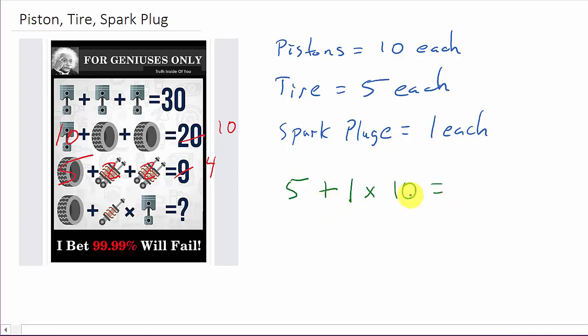Well, what a lot of people put down is 60, because they'll do the 5 plus 1 is 6, and then multiply that times 10 and get the 60. But you've got to think about your order of operations.